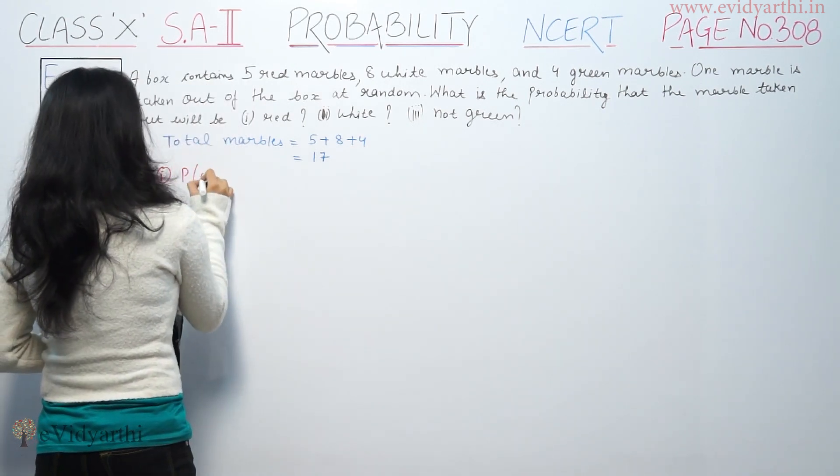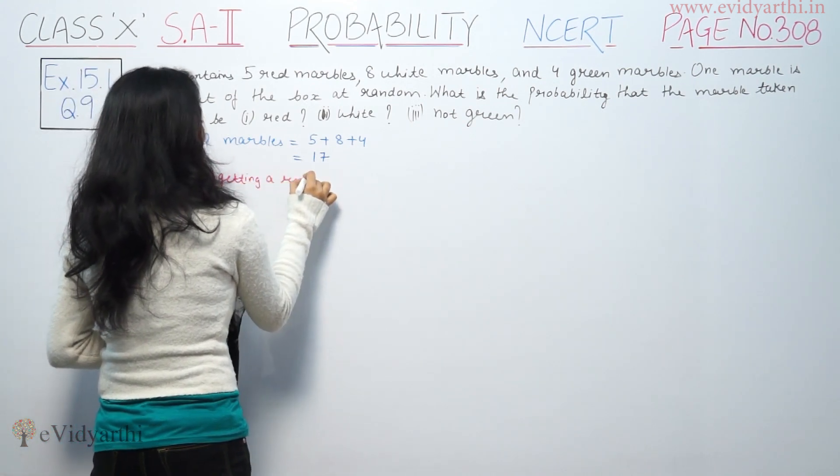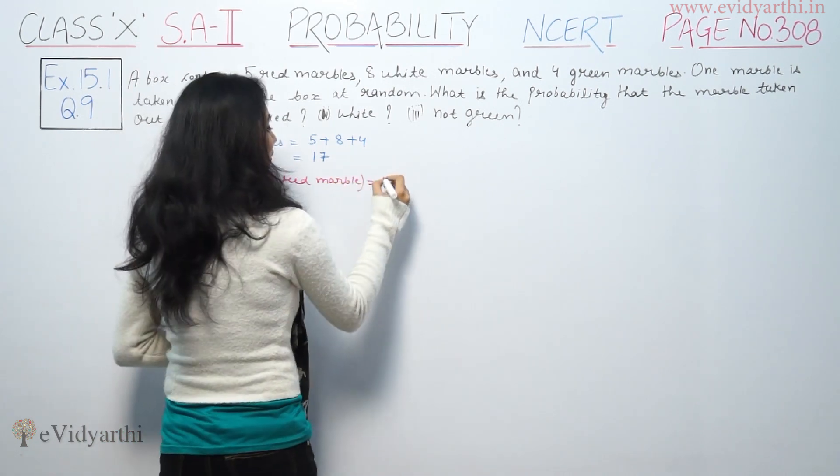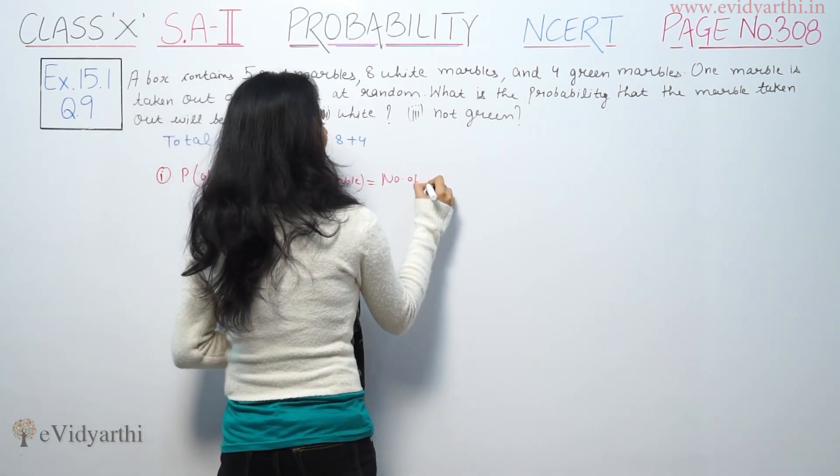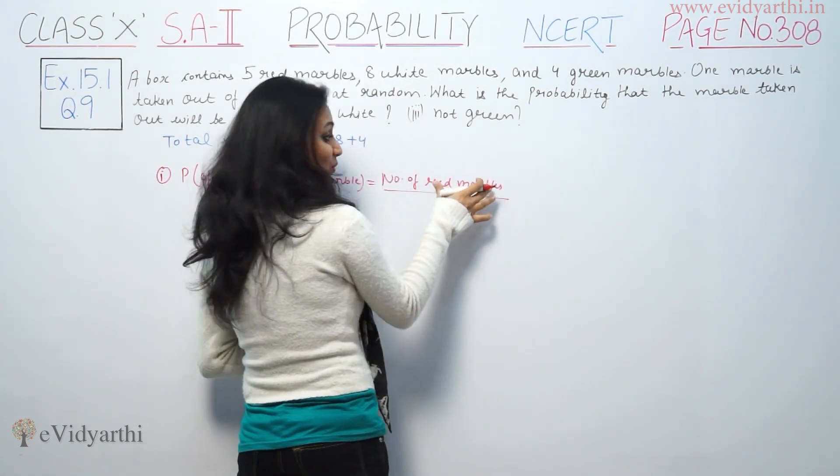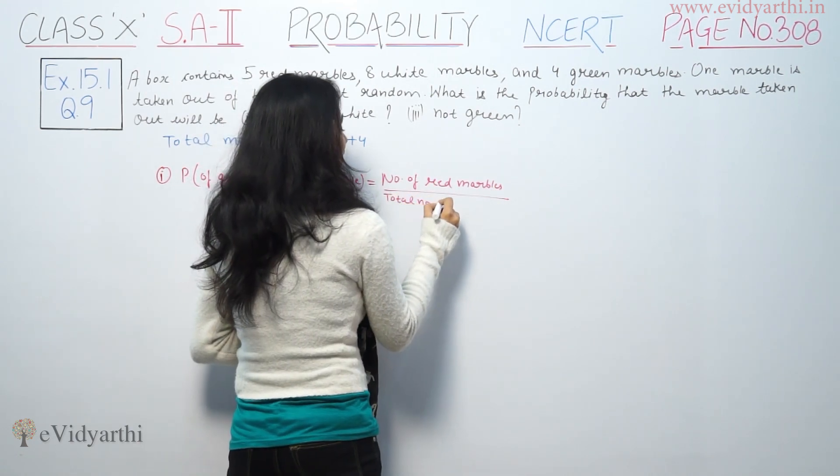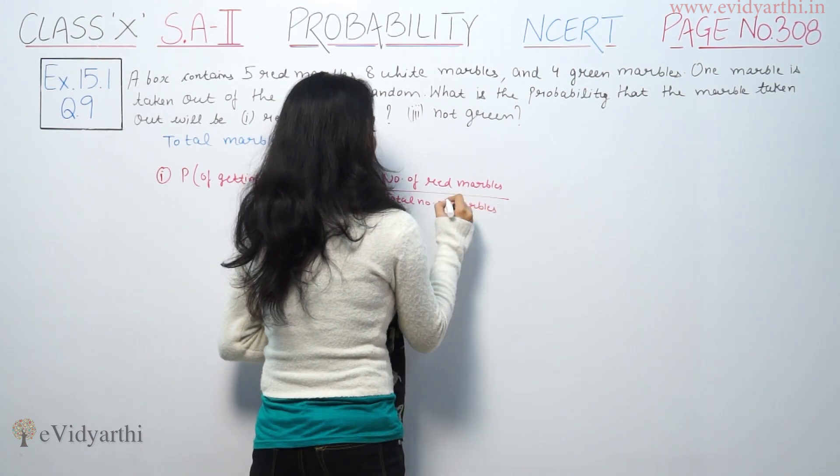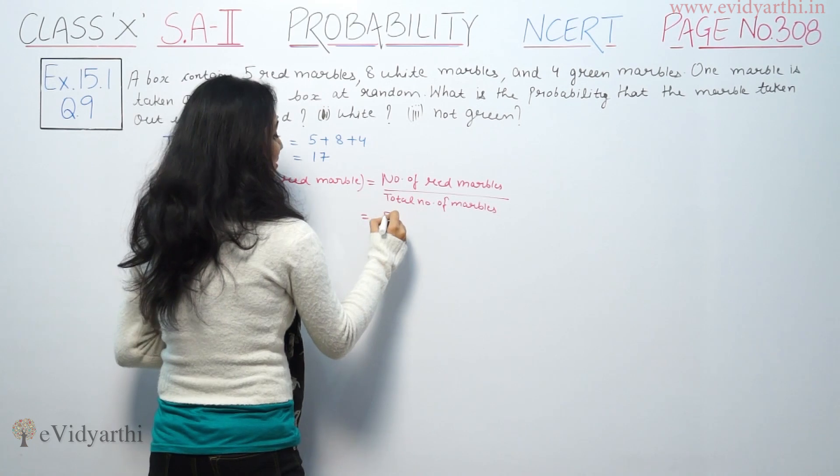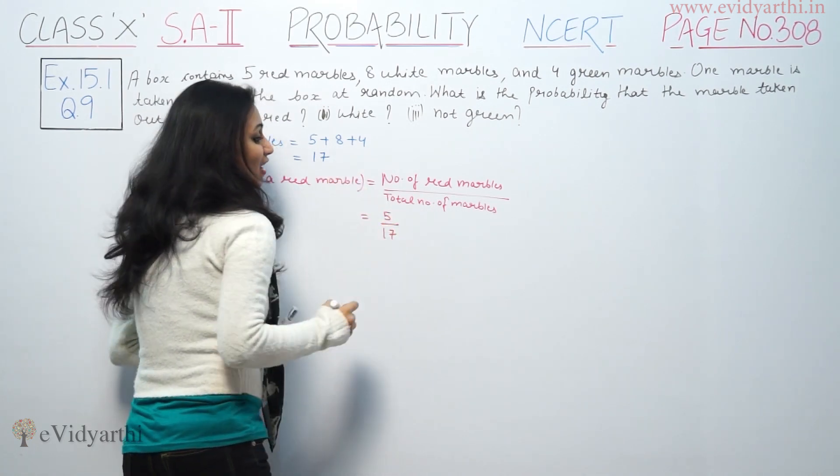Probability of getting a red marble: number of red marbles upon total number of marbles. Red marbles, we have 5. Total marbles are 17. So probability would be 5 over 17.